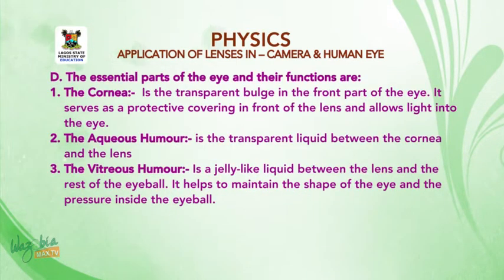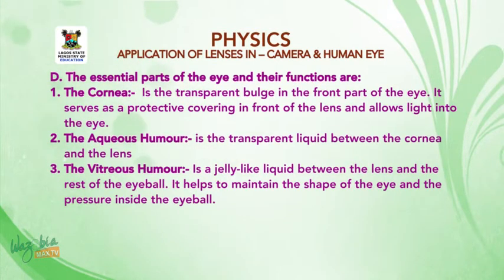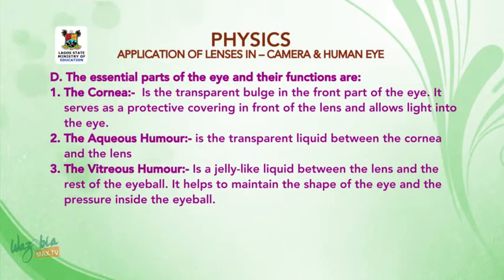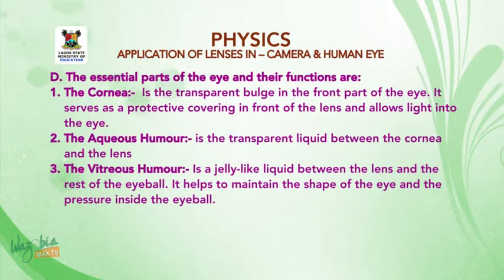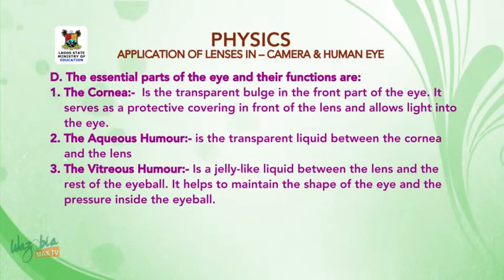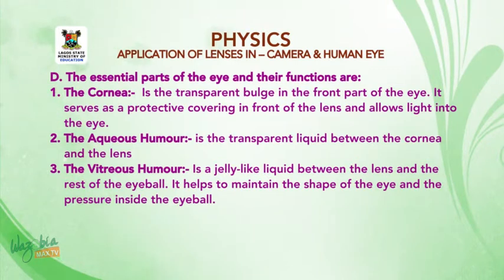The essential parts of the eye and their functions. Number one: the cornea is a transparent bulge in the front part of the eye. It serves as a protective covering in front of the lens and allows light into the eye. Number two: the Aqueous Humor is a transparent liquid between the cornea and the lens. Number three: the Vitreous Humor is a jelly-like liquid between the lens and the rest of the eyeball. It helps to maintain the shape of the eye and the pressure inside the eyeball.